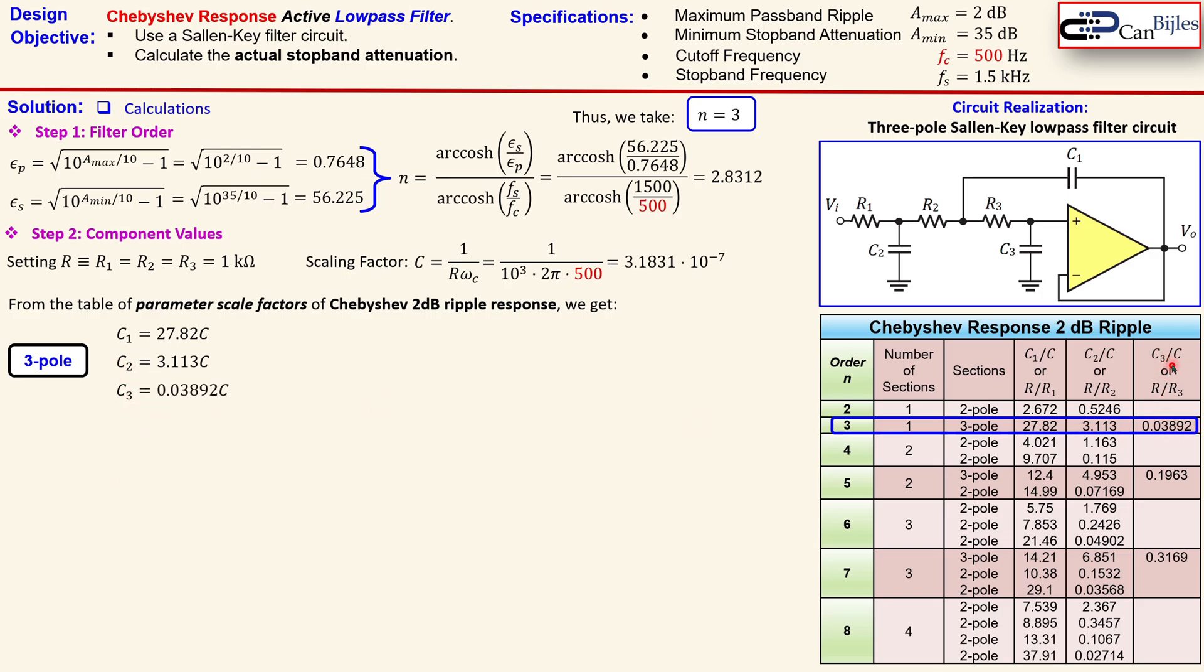So you actually get this one and you write it down such that you express the capacitors as shown here. And now you need to use your scaling factor C in here and you calculate your capacitor values for our design here. You see here 8.855 microfarads, etc.